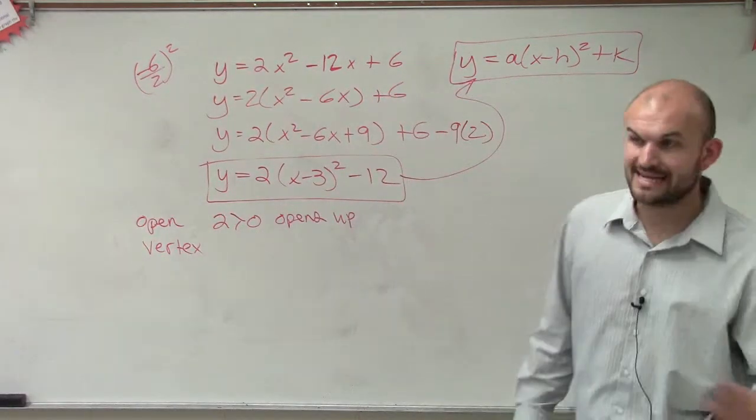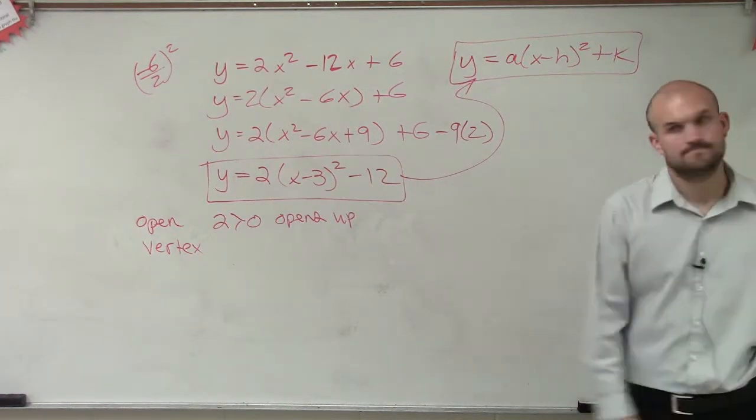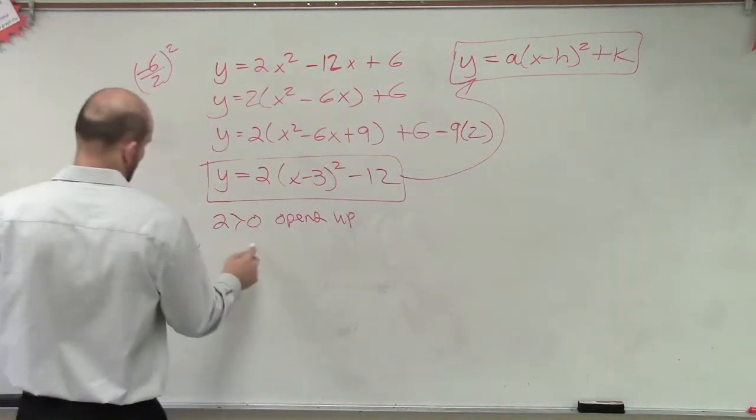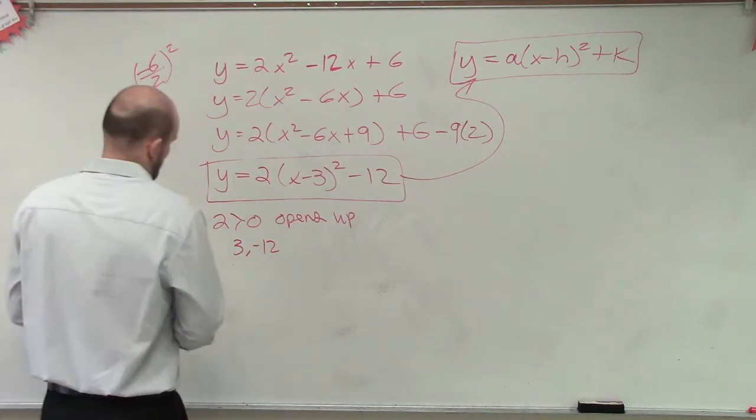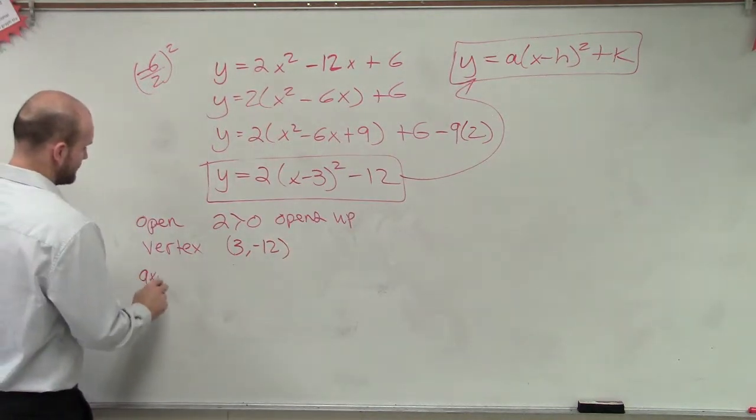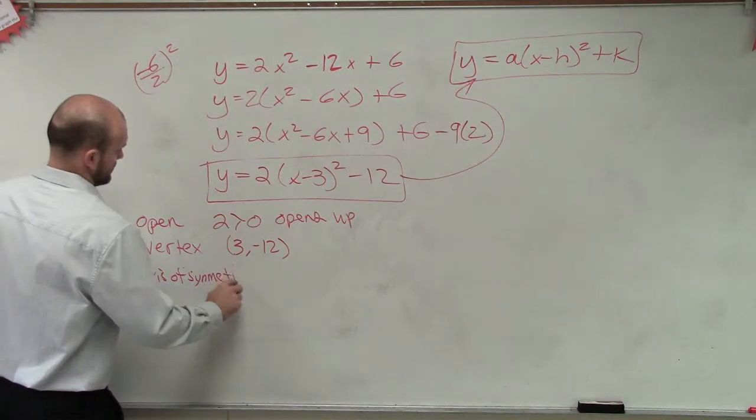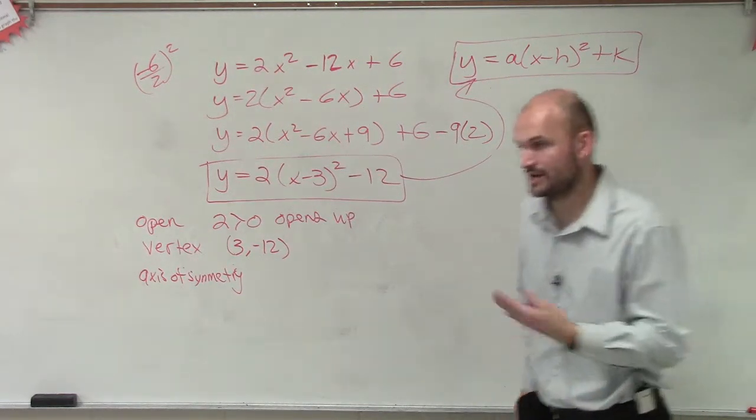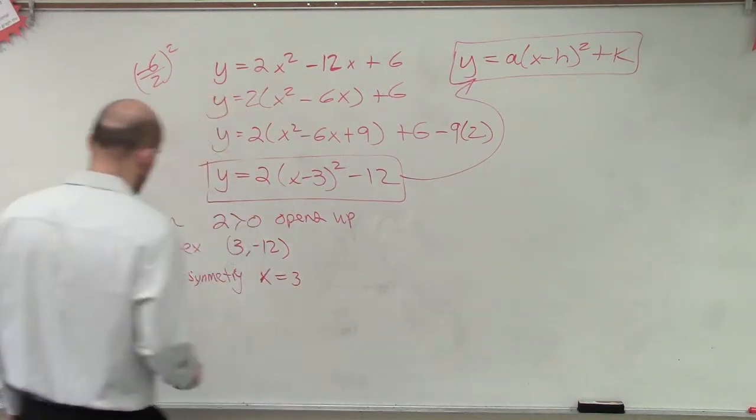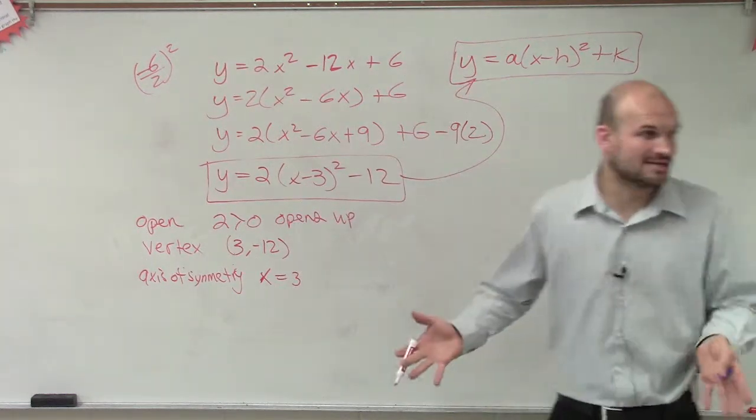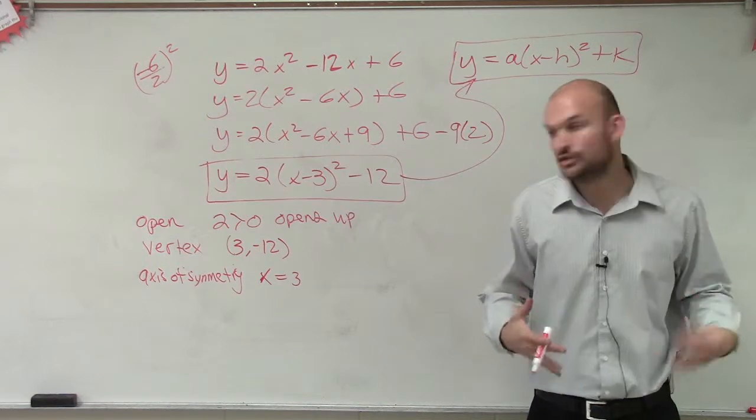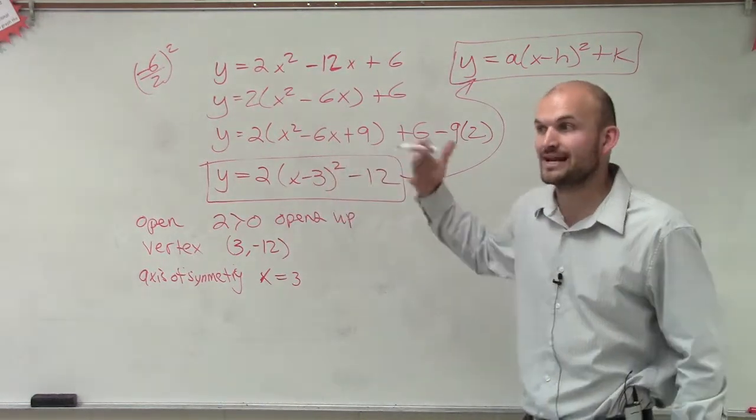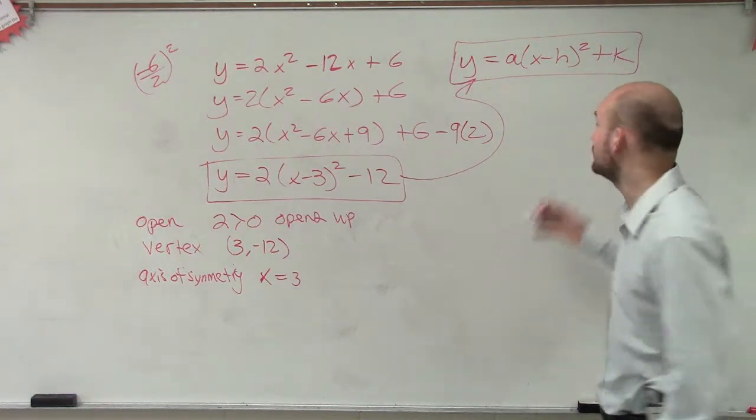Let's determine the vertex. Remember, the vertex is going to be h comma k. So in this case, we're going to have, remember, it's opposite of h. So it's going to be 3 comma negative 12. And the axis of symmetry. So now, since we know we have a graph that's going to open up, we have our axis of symmetry that's vertical. So therefore, x equals 3, your h-coordinate. So that's the stuff you guys already learned how to do. And we learned how to take a graph like this and then transform it and graph it.